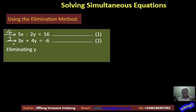If I multiply equation 1 by 4, that will give me 4 times 5X will give me 20X. As I'm multiplying equation 1 now, 4 times minus 2Y will give me minus 8Y, and then 4 times 16 will give me 64. So that's it for the first step.